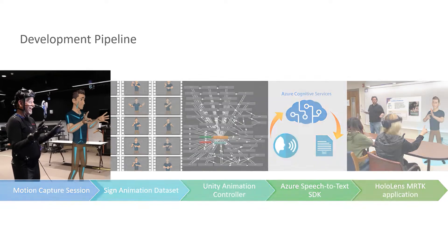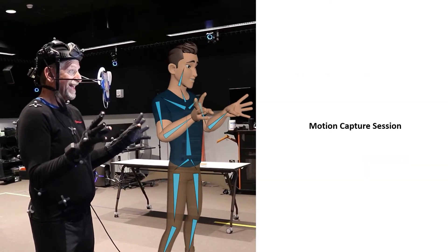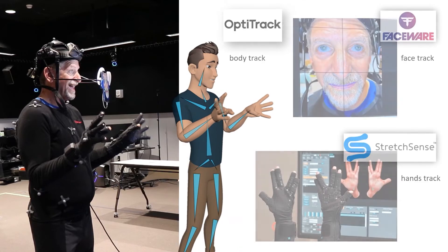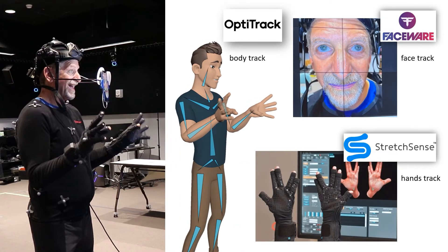To ensure the quality of signing animation on the holographic avatar, we adopted motion capture technology to create the sign animation. We recruited a professional signer to sign a math lesson and captured his body, face, and hand motion data through three different platforms, namely OptiTrack, FaceWear, and StretchSense, respectively. The data from the three tracking systems were transferred into MotionBuilder in real-time on a rigged character.